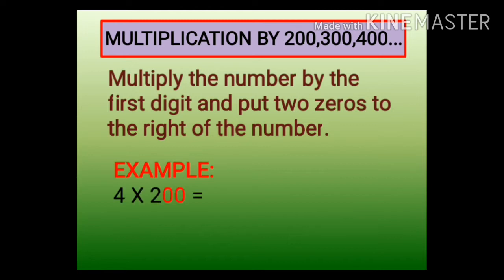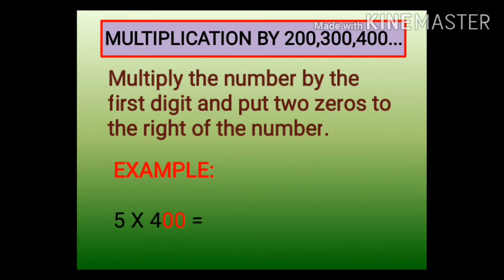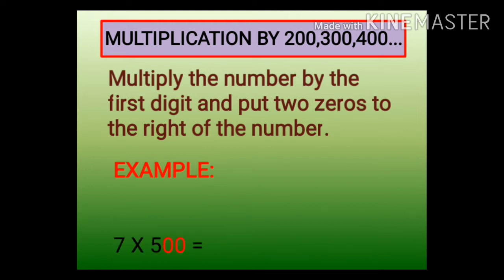Let us see some examples. 4 into 200: first multiply the first digit, so 4 into 2 is equal to 8, then place two zeros to the right. Next example: 5 into 400. First multiply 5 into 4, that is equal to 20, then place two zeros to the right, so it is 2000. Third example: 7 into 500. Multiply 7 into 5, which is equal to 35, then place two zeros to its right. That is how we multiply a number by 200, 300, 400, and so on.